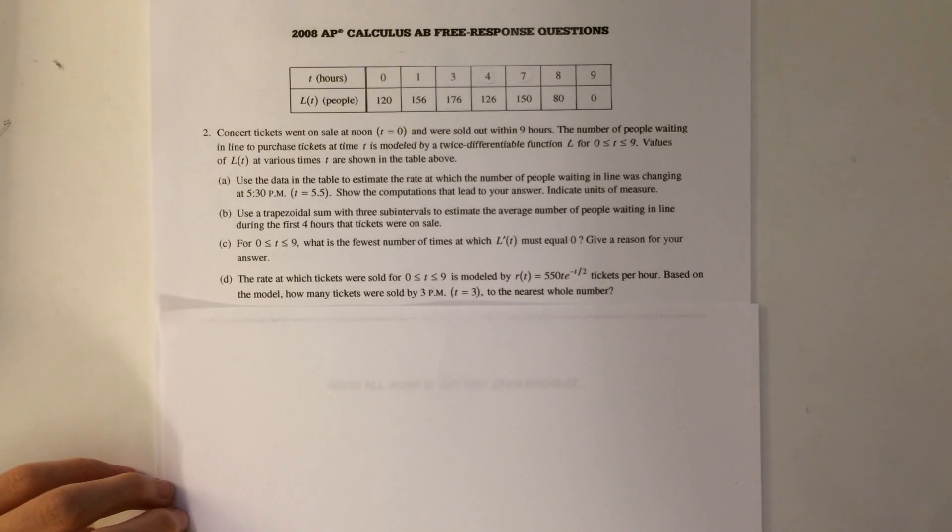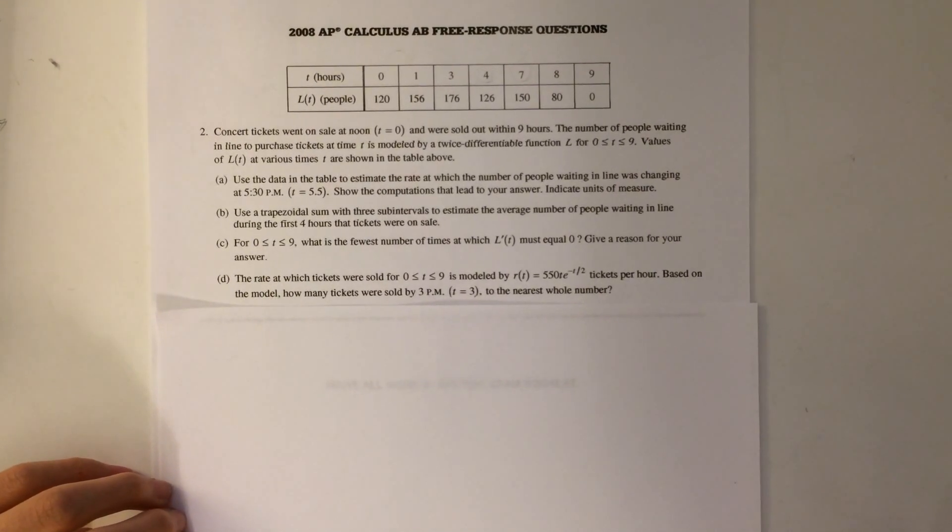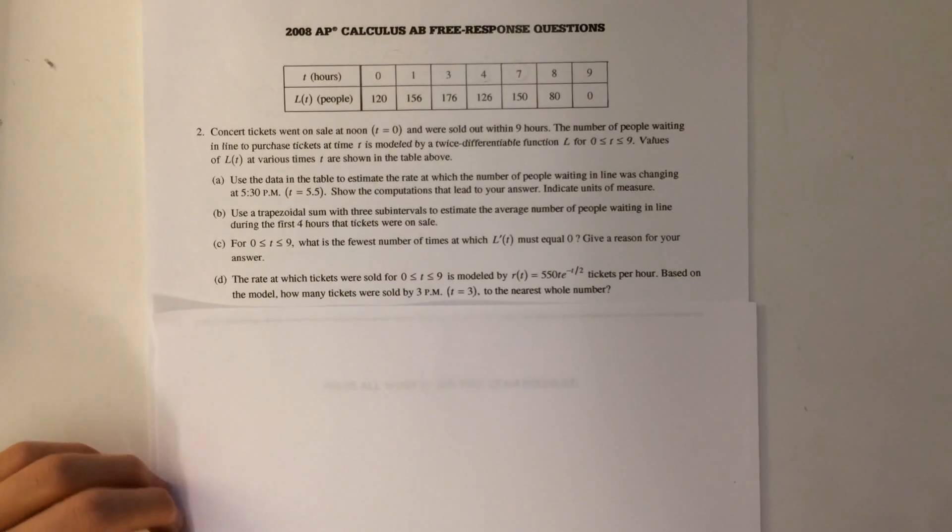The question gives us the function of the rate at which tickets were sold. Therefore, in order to find how many tickets were sold at a certain time, we must take the integral of the rate function.